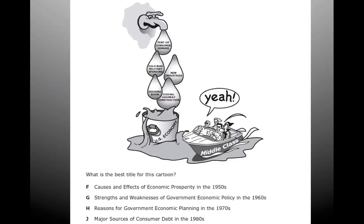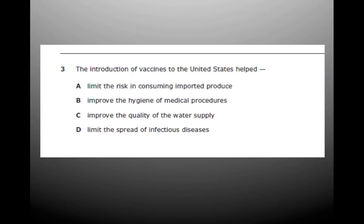Here's a really good EOC question — what is the best title for this cartoon? You have a middle class cruising along, and a fountain with labels: pent-up consumer demand, Cold War military spending, new industries, housing boom suburbs, and federal highway construction — all dripping into the U.S. economy. The options are: causes and effects of economic prosperity; strengths and weaknesses of government and economic policy; reasons for government's economic planning; or major sources of consumer debt. You should know this one.